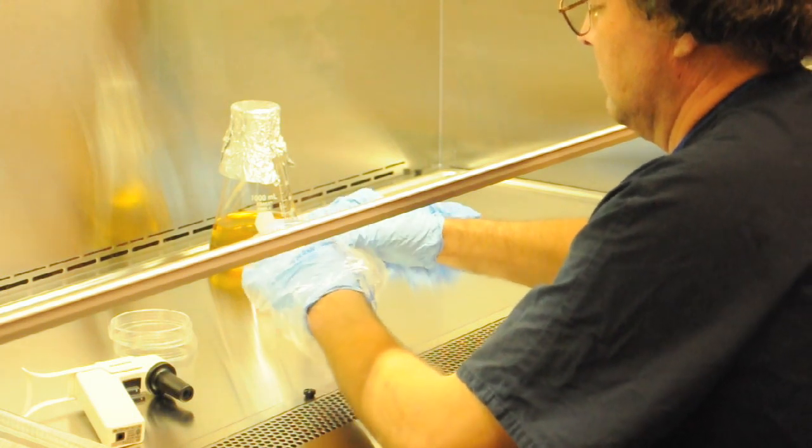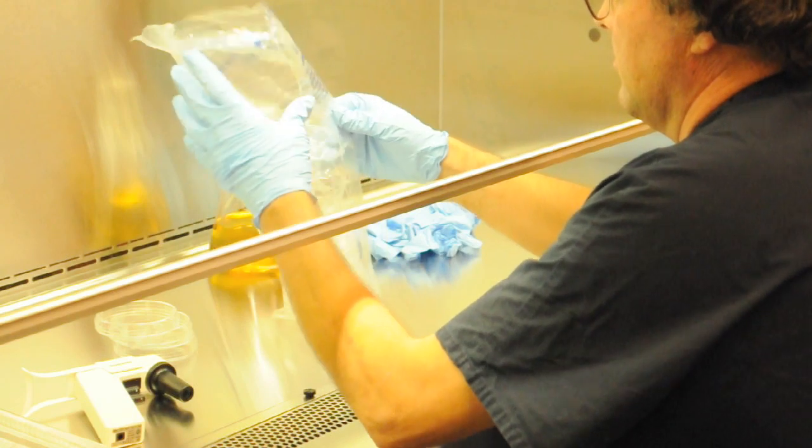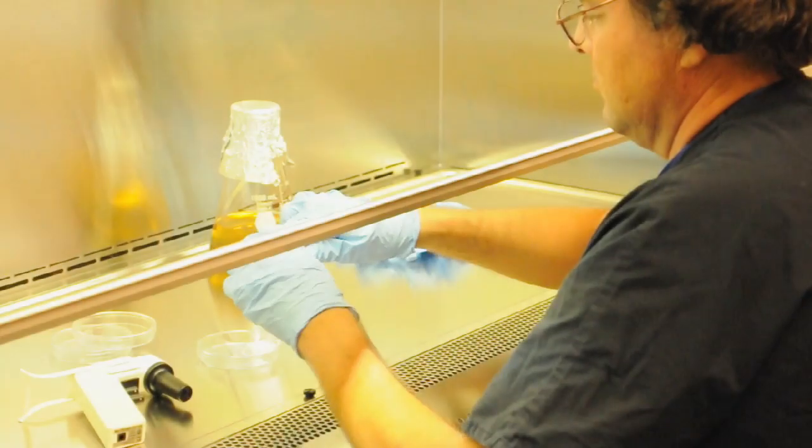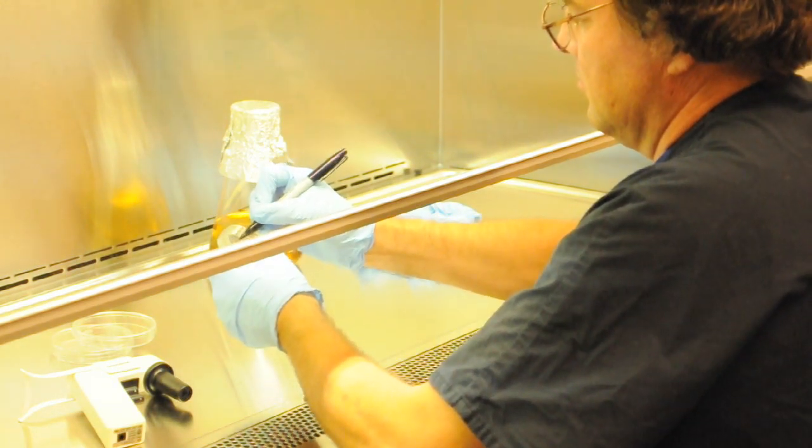Okay, we're taking the sterile petri plates out of the bag and stacking them inside the hood. We're going to move the bag out of our way. Next step is to label them. It's no good putting medium if we don't know what they are.